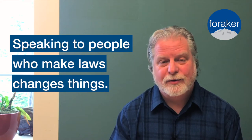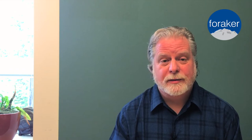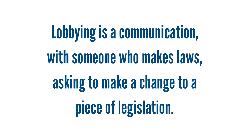But when we speak to people who make laws and direct or implement public policy, that's when we enter a small portion of advocacy called lobbying. Lobbying, very simply — and this is an IRS definition — is a communication with someone who makes laws: a legislator, which could be a city council member, a state legislator, or a member of our federal congressional delegation, and we're asking them to make a change in a specific piece of legislation.